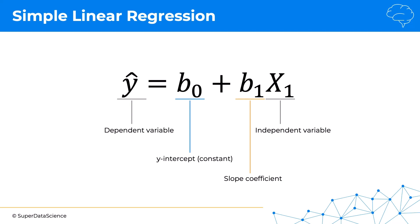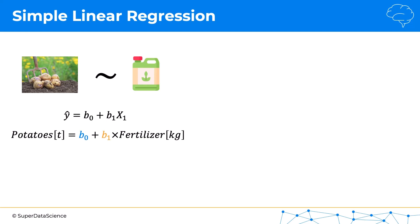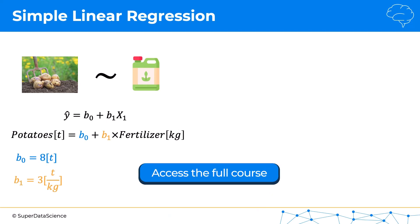To make things more fun, we're going to use the example of predicting the output of potatoes on a farm based on the amount of fertilizer used. Here's our equation modified to fit that example. Let's say we ran the simple linear regression algorithm and it came up with the following values: b0 equals eight tons and b1 equals three tons per kilogram.